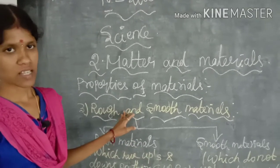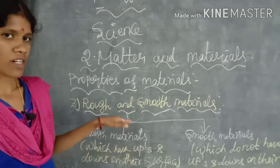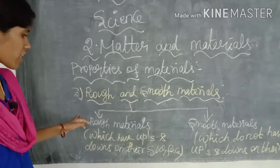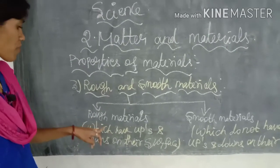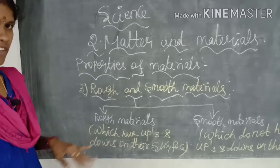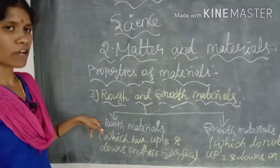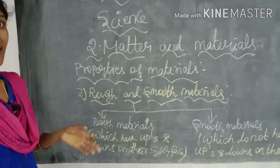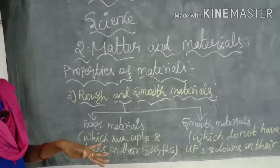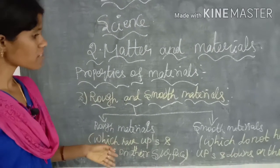Now we are going to see the third property: rough and smooth materials. In the case of a rough material, the materials which have ups and downs on the surface — an up surface and a down surface — belong to the rough material. For example, a tire has an up surface and a down surface, and the same goes for bricks.